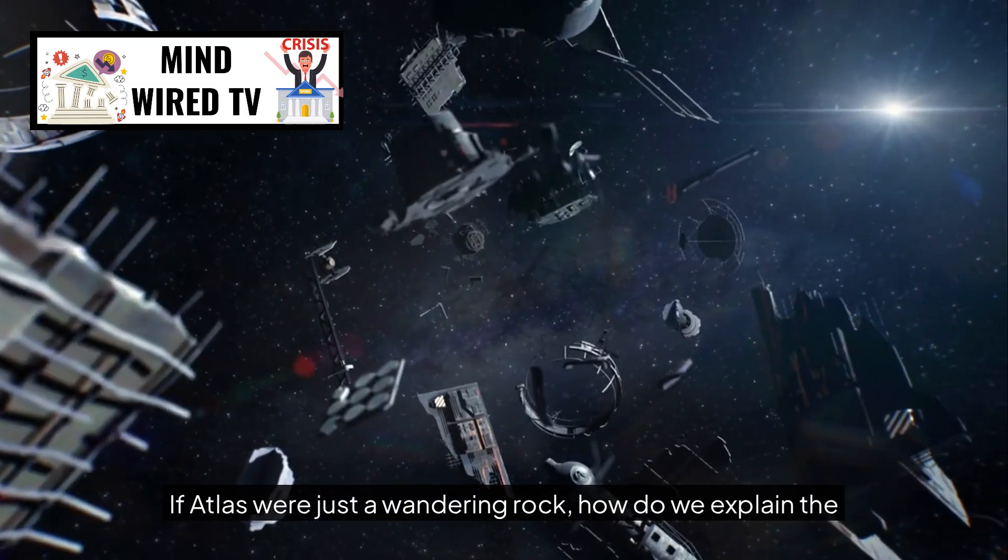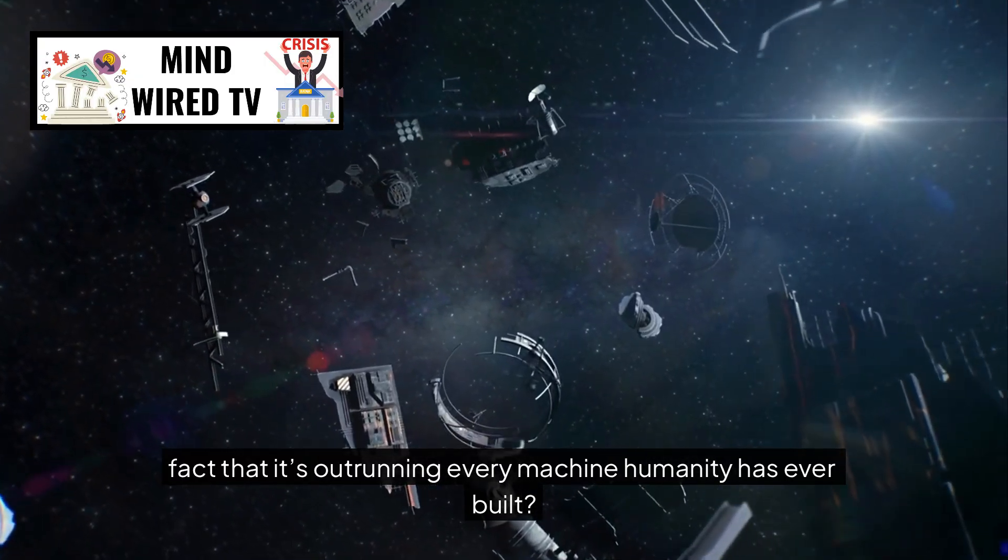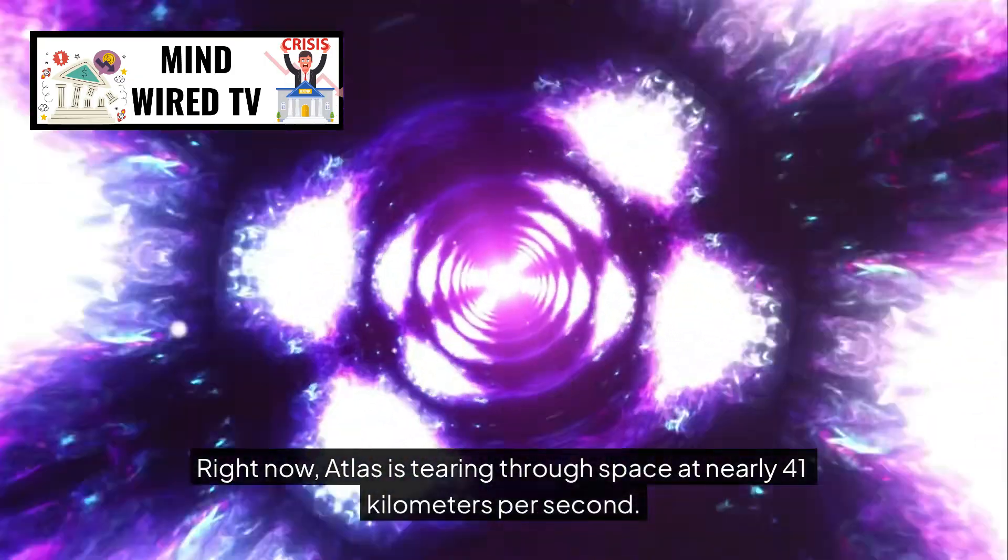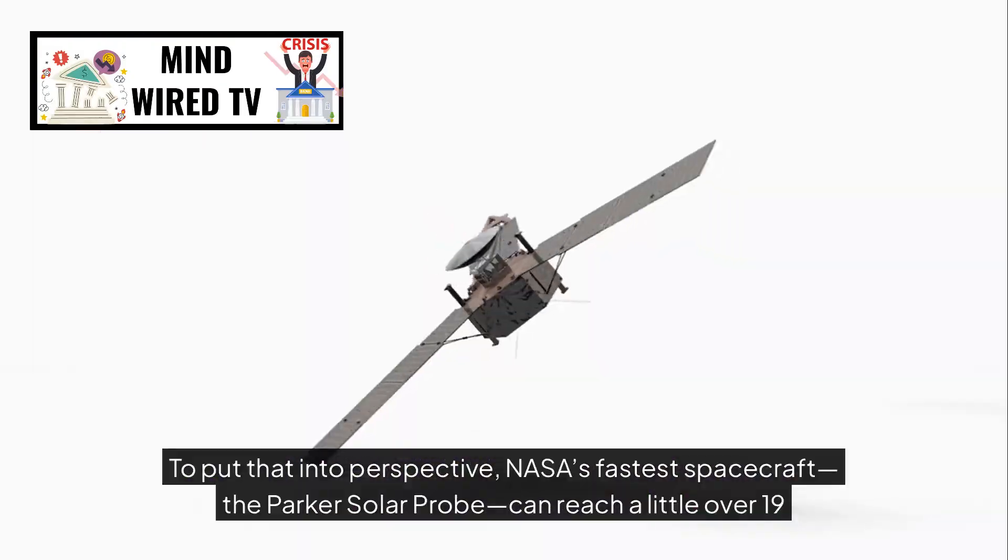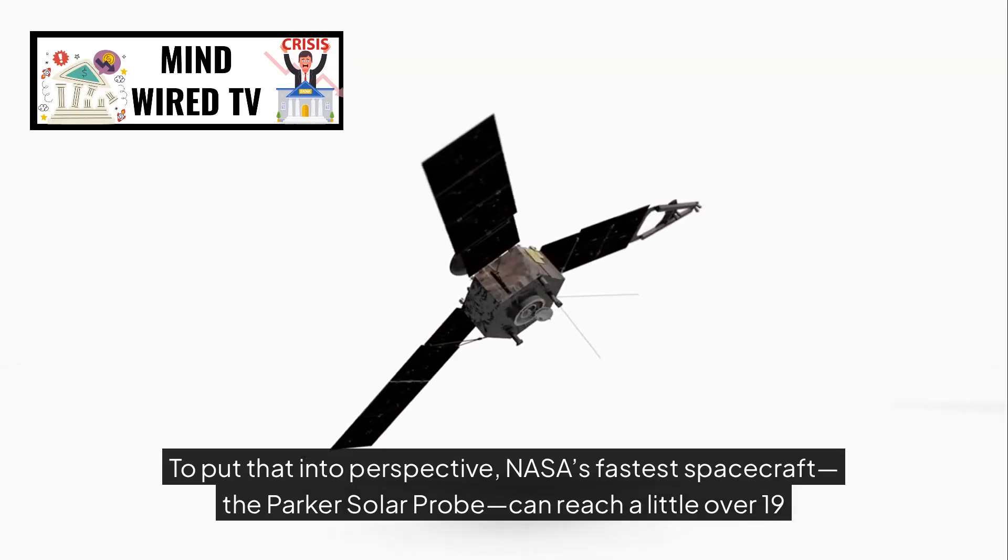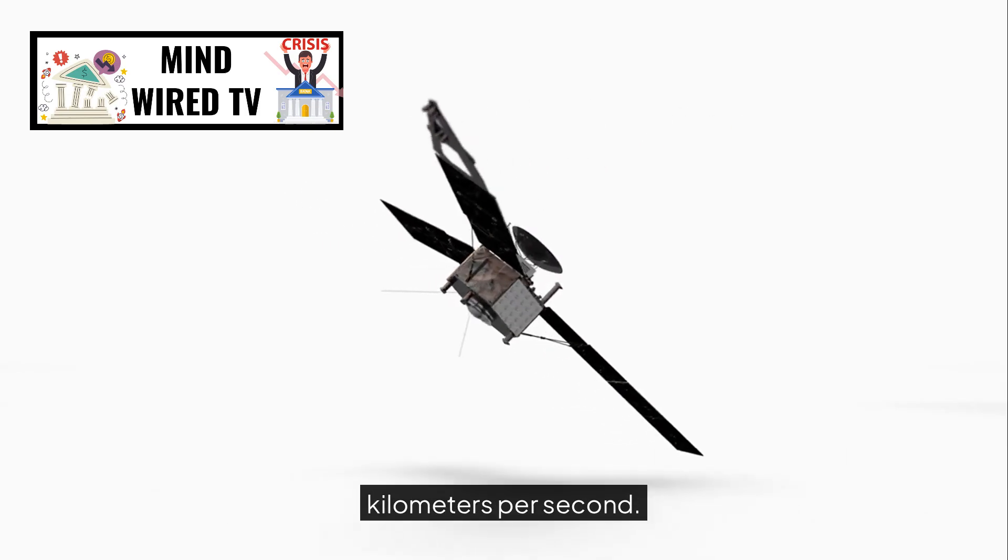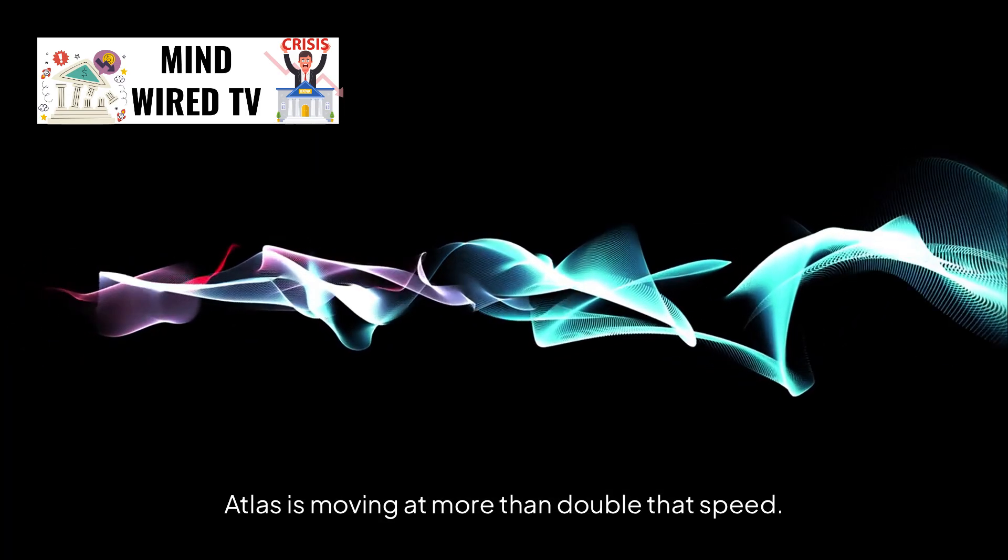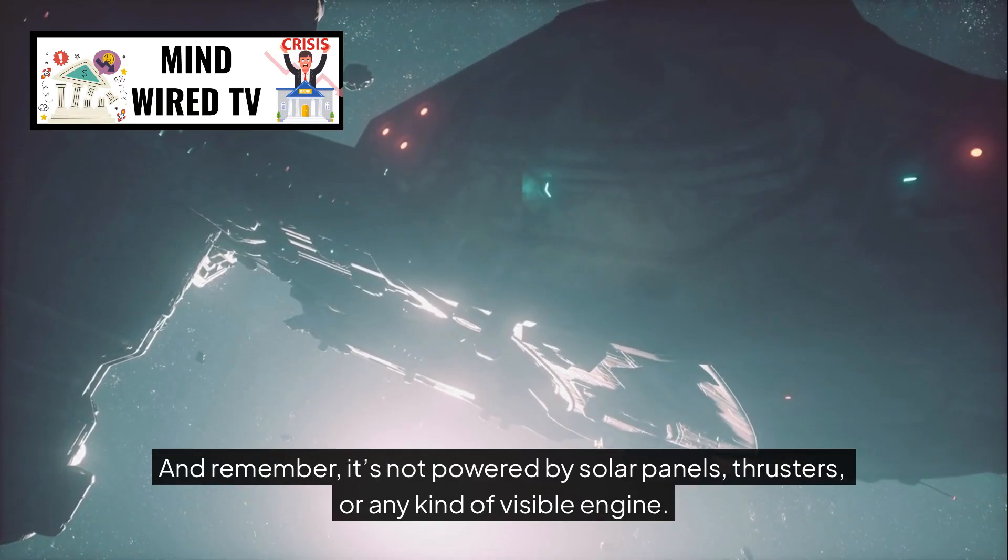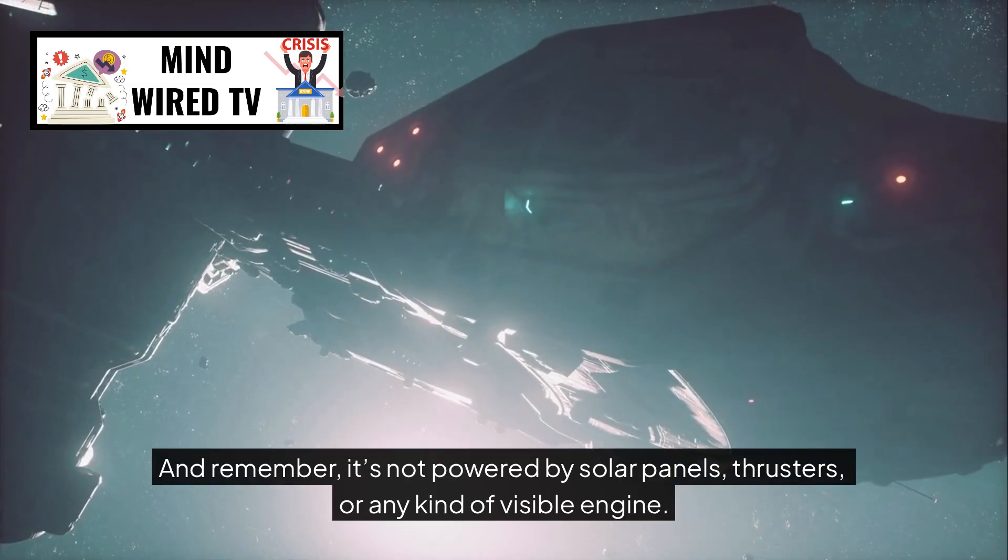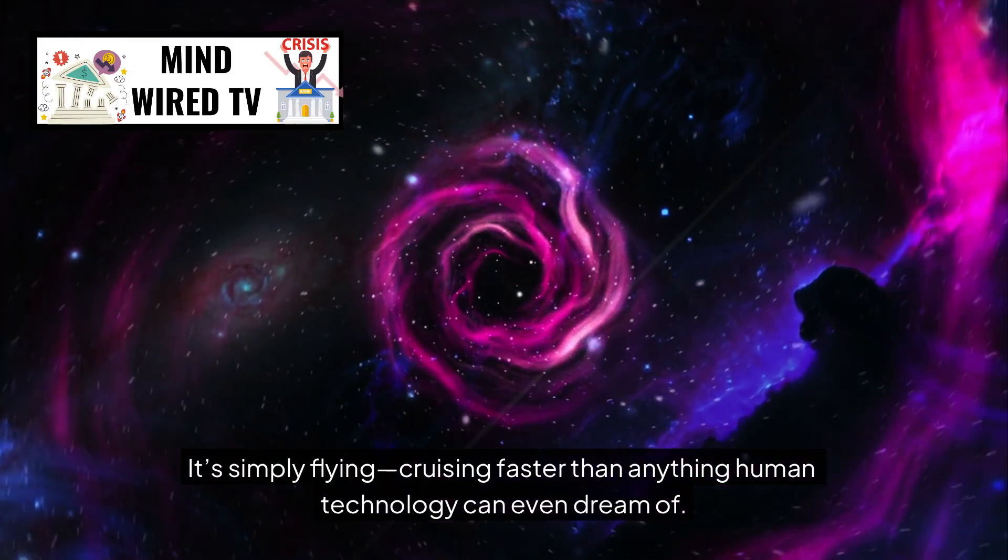Its raw speed defies explanation. If Atlas were just a wandering rock, how do we explain the fact that it's outrunning every machine humanity has ever built? Right now, Atlas is tearing through space at nearly 41 kilometers per second. To put that into perspective, NASA's fastest spacecraft, the Parker Solar Probe, can reach a little over 19 kilometers per second. Atlas is moving at more than double that speed. And remember, it's not powered by solar panels, thrusters, or any kind of visible engine. It's simply flying, cruising faster than anything human technology can even dream of.